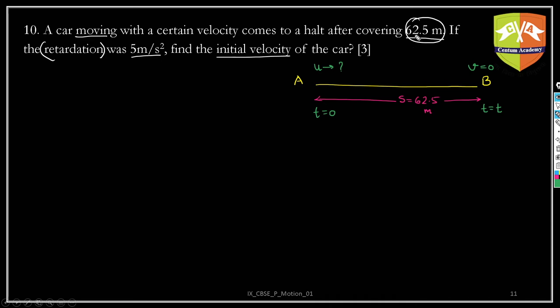Have we got any other information? Yes, we have acceleration. Now here is the error zone. Many people will take simply 5 meter per second squared. But the acceleration is minus 5 meter per second squared. Why is minus? Because the velocity is coming from non-zero value to halt.